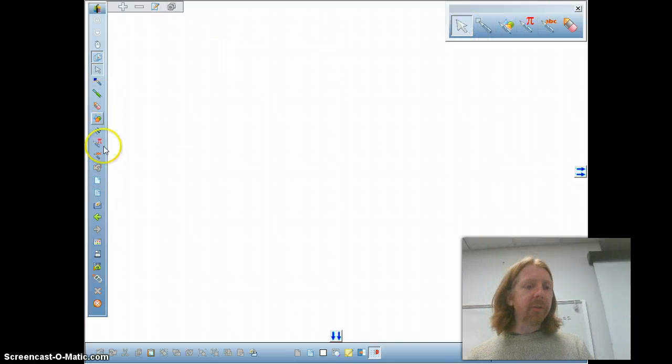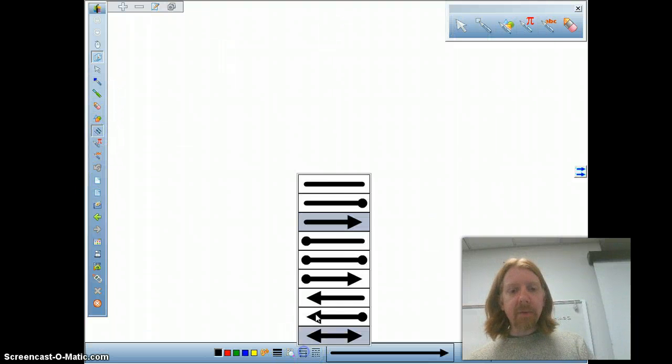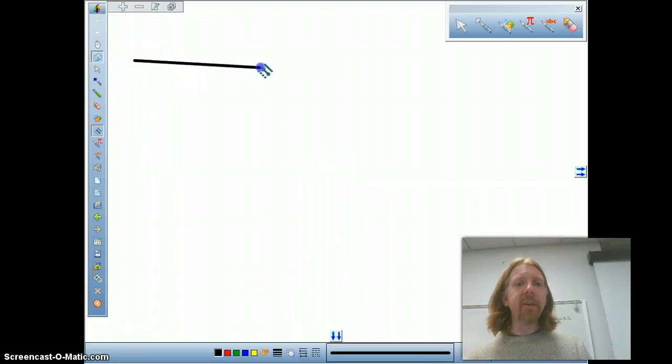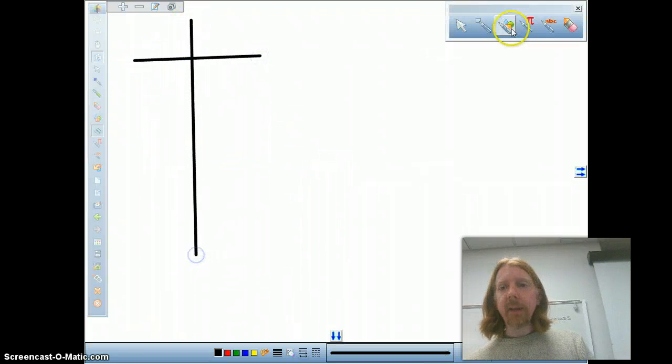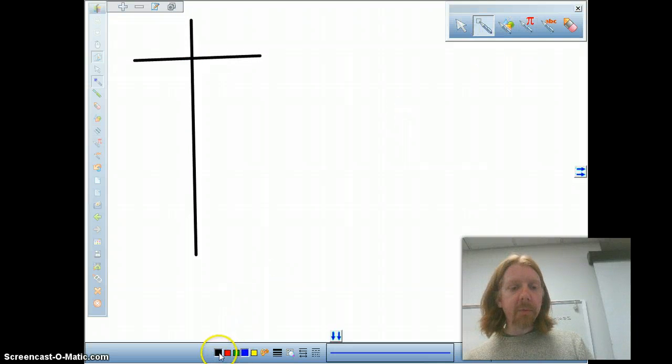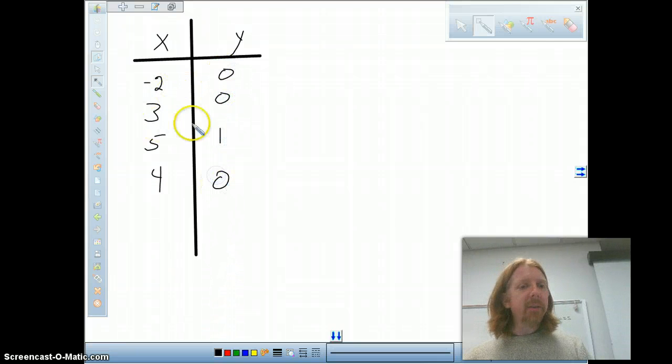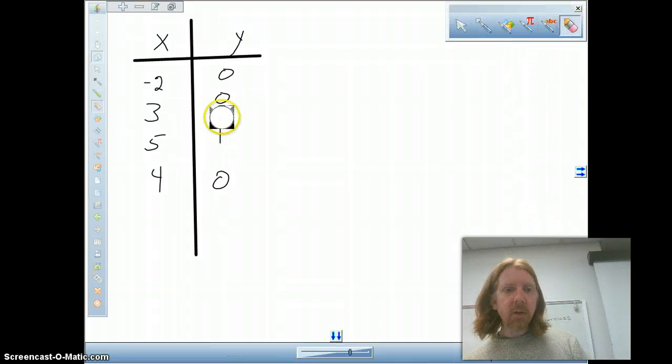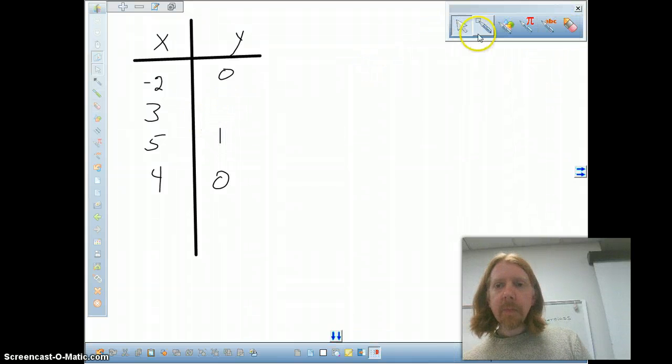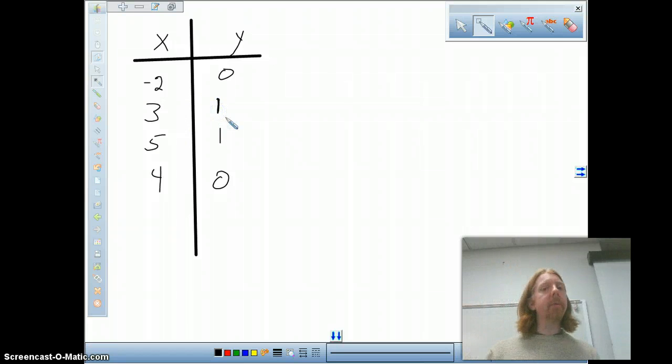Let's take some number sets, and let's do a t table and see if maybe that also shows some functions versus non-functions. So there's my t table. Put some numbers on it. Here's my x and my y, and so maybe I go negative 2, 3, 5, 4. And then over here I do 0, 0, 1, 0. Actually, I want to make a small change. There, there's my t table. Now the question is, does this collection of data represent a function?